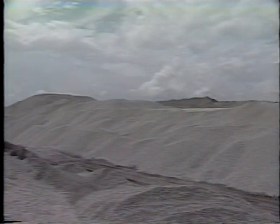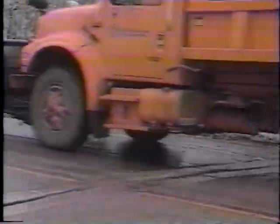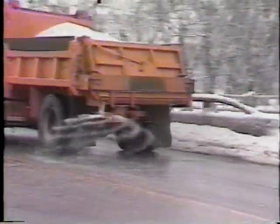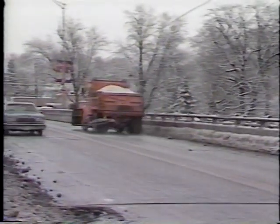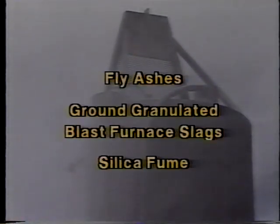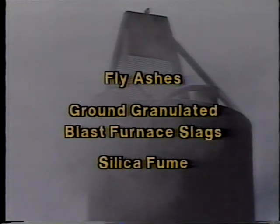Alkalies can also be found in certain types of aggregates, notably volcanic aggregate in the western United States. As a result, alkalies can become concentrated in the concrete by wetting and drying cycles. They may also be derived from such sources as seawater and de-icing salts. Pozzolanic materials are widely used to prevent ASR. These include fly ashes, ground granulated blast furnace slags, and silica fume.